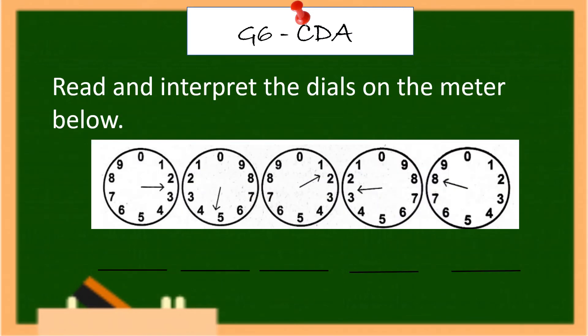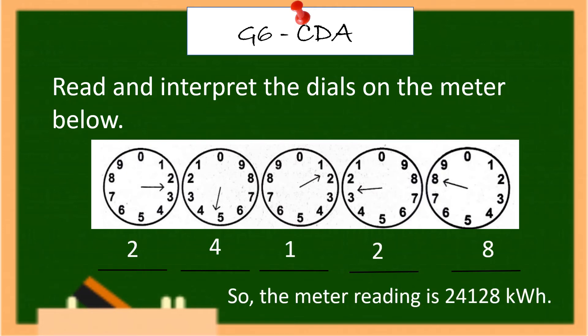Read and enter the dials on the meter shown below. What is your answer? The correct answer is 24,128, so the meter reading is 24,128 kilowatt-hours.